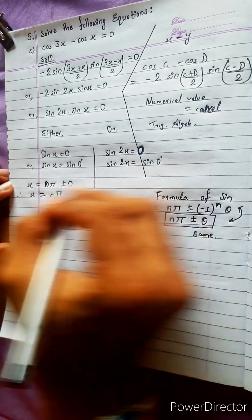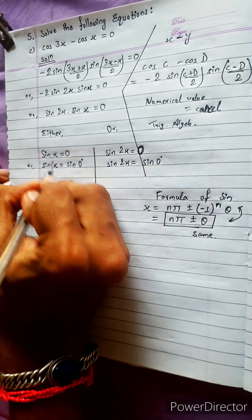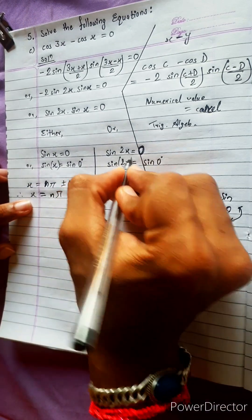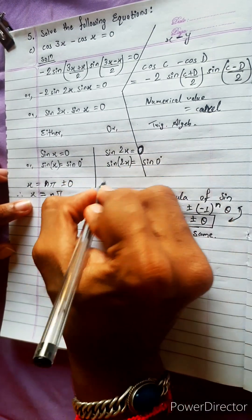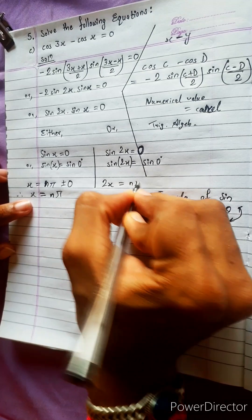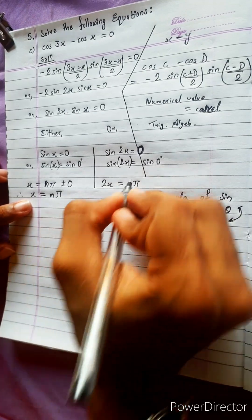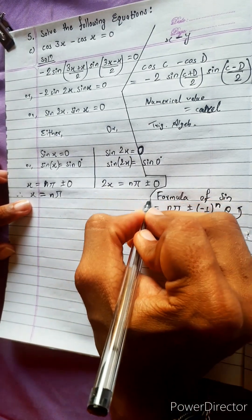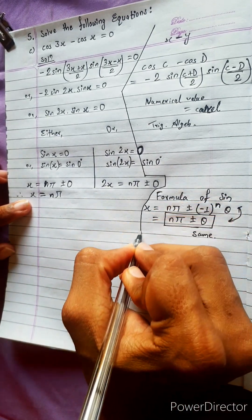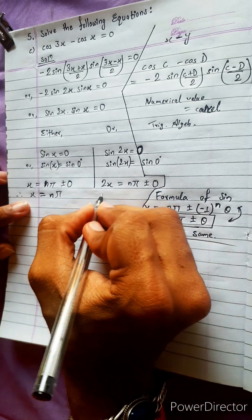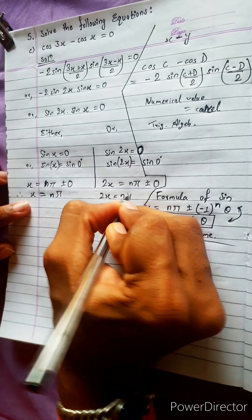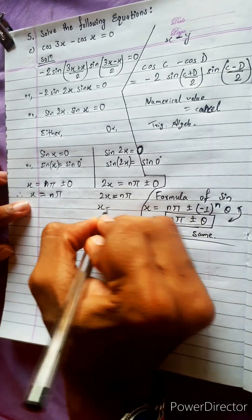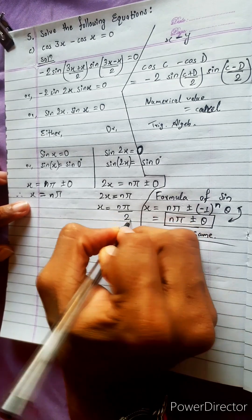Now for the second case, sin 2x equals 0. Here it was x, giving n pi. But here it is 2x. So 2x equals n pi plus minus 0, which gives 2x equals n pi. Therefore x equals n pi by 2.